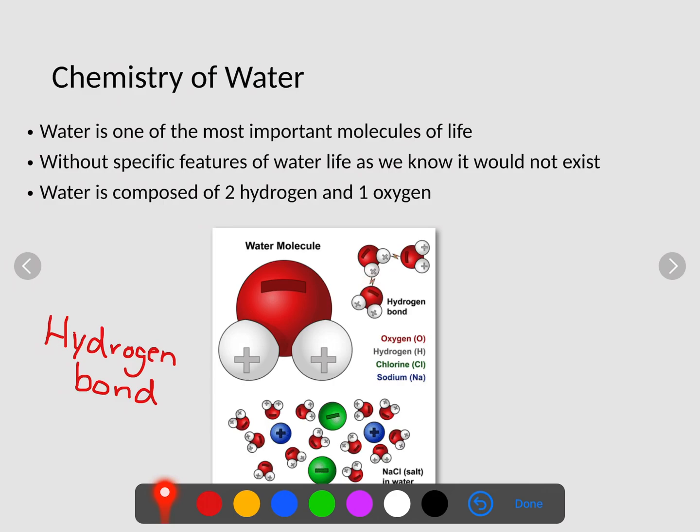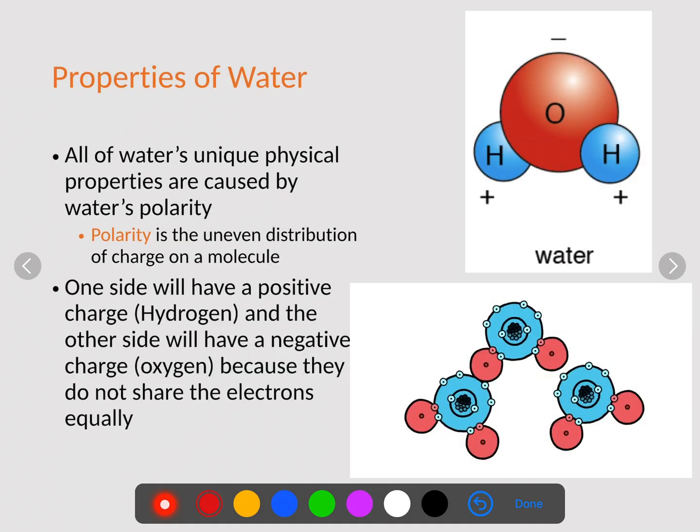Remember, water is composed of two hydrogens and one oxygen. So these hydrogen bonds are the reason that life pretty much exists on Earth. It gives water all of its properties. Water is what's known as a polar molecule or it has polarity. This means there is an uneven distribution of charge on a molecule. One side will have a positive charge, which would be our oxygen side right here.